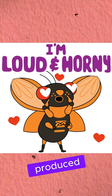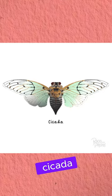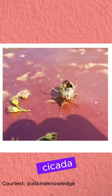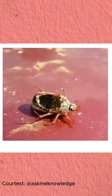A powerful parasitic fungus called Massospora. When a cicada becomes infected, it undergoes a gruesome transformation. The fungus takes control, causing the cicada to lose its lower abdomen and genitals. But the real horror show is just beginning. The infected cicadas now behave like true zombies, manipulated by the fungus for its own sinister agenda.